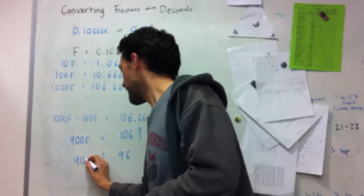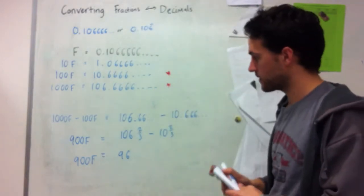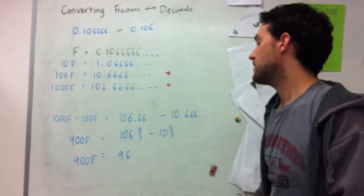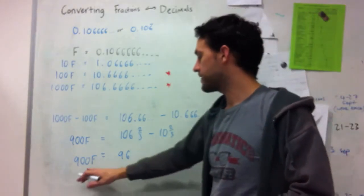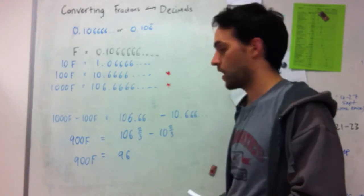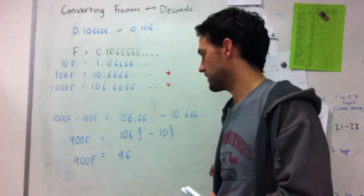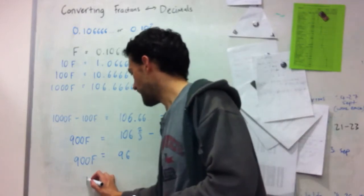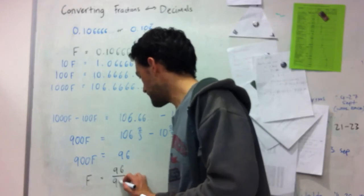So I've got that 900f is equal to 96. Then to get f by itself, an expression of f by itself, I divide both sides by 900 because that enables me to cancel out essentially this 900 here. So I get f is equal to 96 over 900.